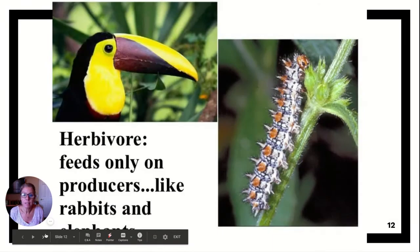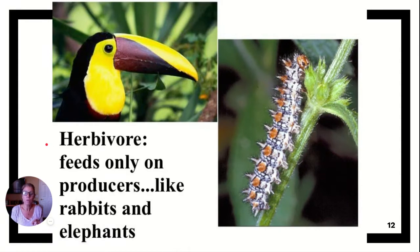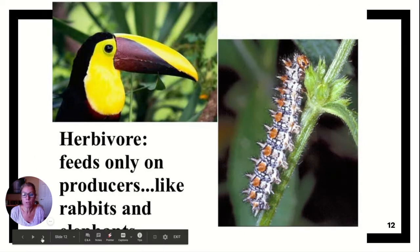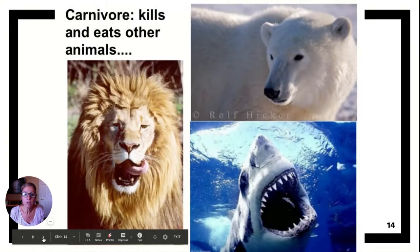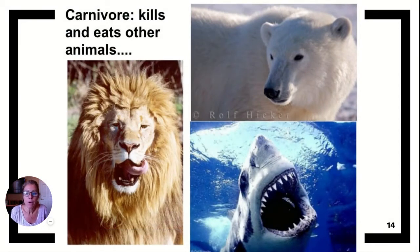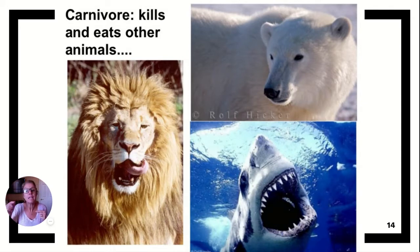Herbivores feed only on producers, like plants. Examples include rabbits and elephants. Now let's level up and talk about carnivores — they kill and eat other animals. If they eat an herbivore, they are considered a secondary consumer.